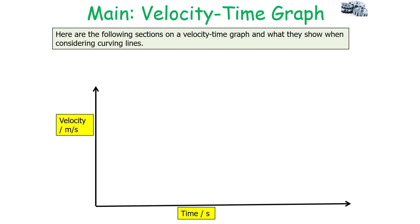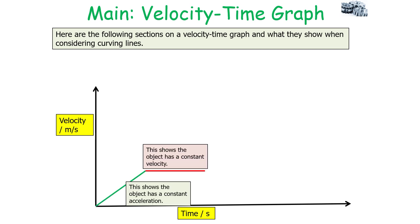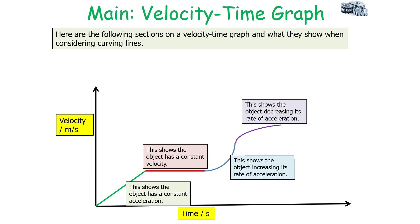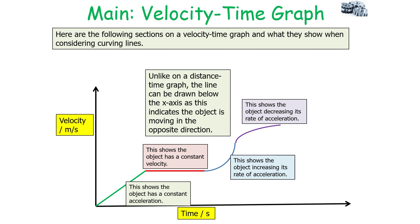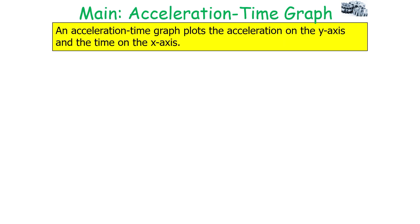Here are the sections on the velocity-time graph showing curved lines: a straight upward line shows constant acceleration; a flat line shows constant velocity; a curve with increasing gradient shows the object's rate of acceleration is increasing; and a curve with decreasing gradient shows the rate of acceleration is decreasing. Unlike a distance-time graph, the line can go downwards as velocity can decrease, and it can go below the x-axis because the object may be moving in the opposite direction.